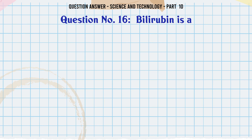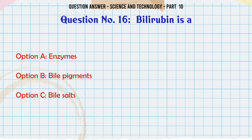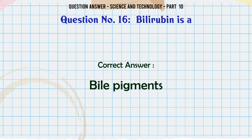Bilirubin is. A. Enzymes. B. Bile pigments. C. Bile salts. D. None of the above. The correct answer is Bile pigments.